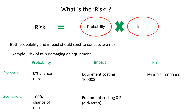In another scenario, there is 100% chance of rain but the equipment is costing only $0 — maybe scrap items. So here again the risk will be nil. This indicates both probability and impact play an important part in calculating risk. Even if my equipment costs $10,000 but my probability is 0, my risk will be 0. On the other hand, even if there is 100% probability but my equipment value is $0, my risk will also be 0.